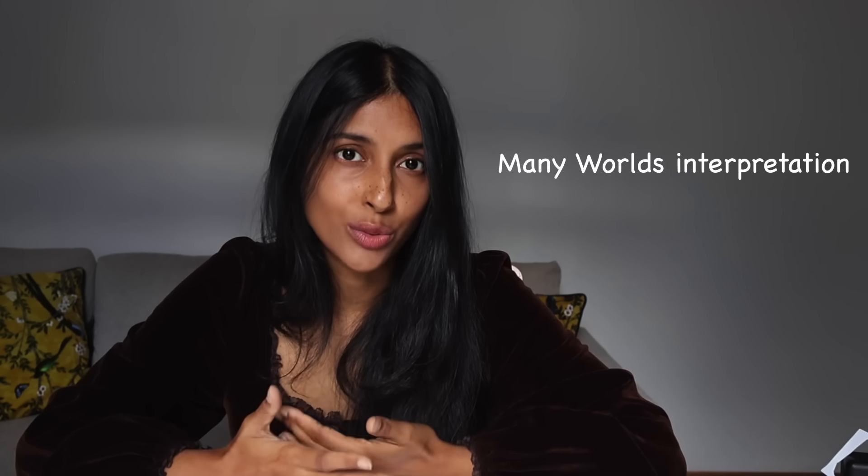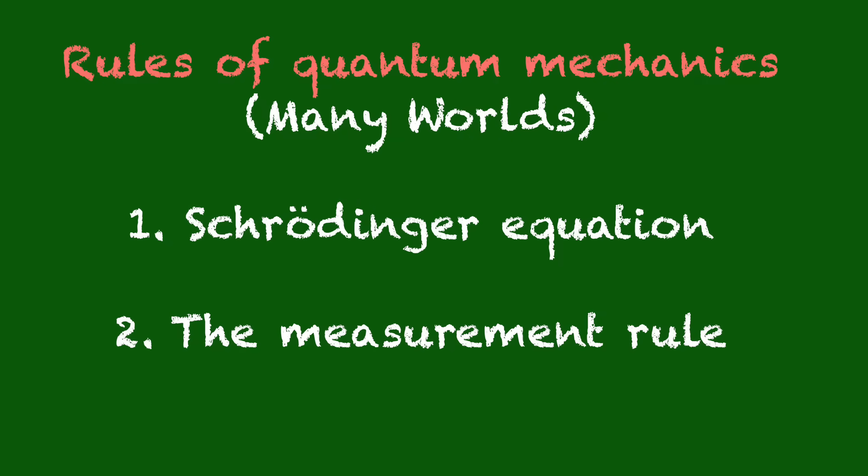So one alternative that I like but I'm still a little bit uneasy about is called the many worlds interpretation of quantum mechanics. What it does is it just removes the second rule entirely. Now you might be wondering how is that possible? Surely that would contradict the experimentally verified facts if there's no measurements at all. But in fact it brings back the illusion of measurements in a very clever way. So I've made a couple of videos about that and I'll link them here.